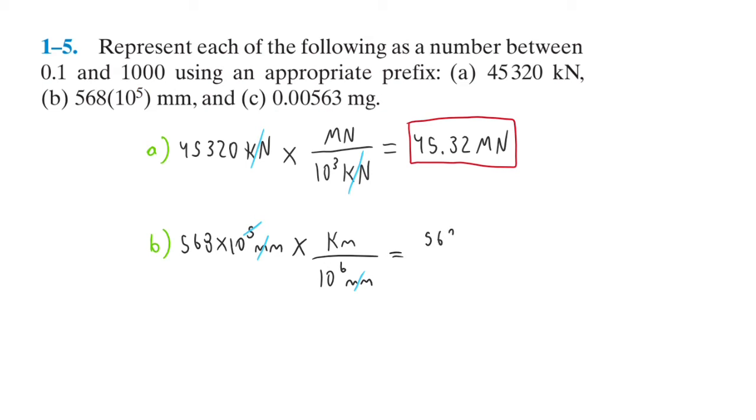So we're left with 568 kilometers over 10, which is going to give us 56.8 kilometers. That's between 0.1 and 1,000, so this is the second answer.